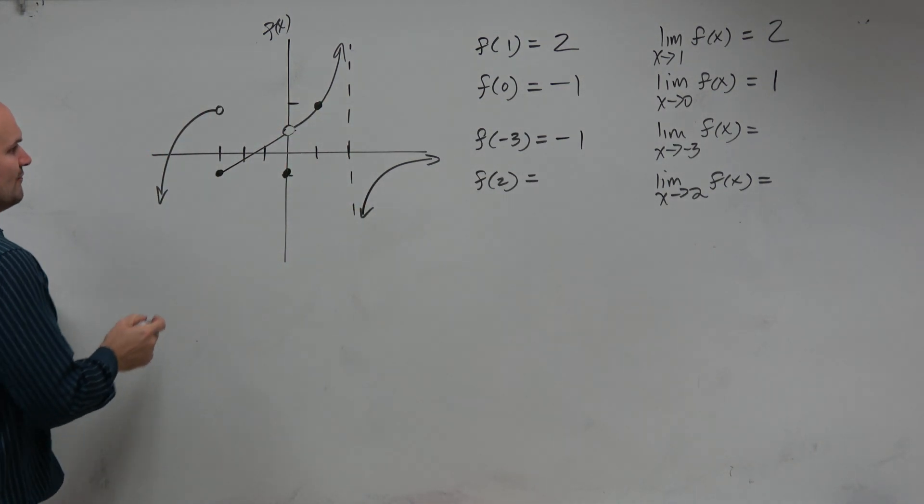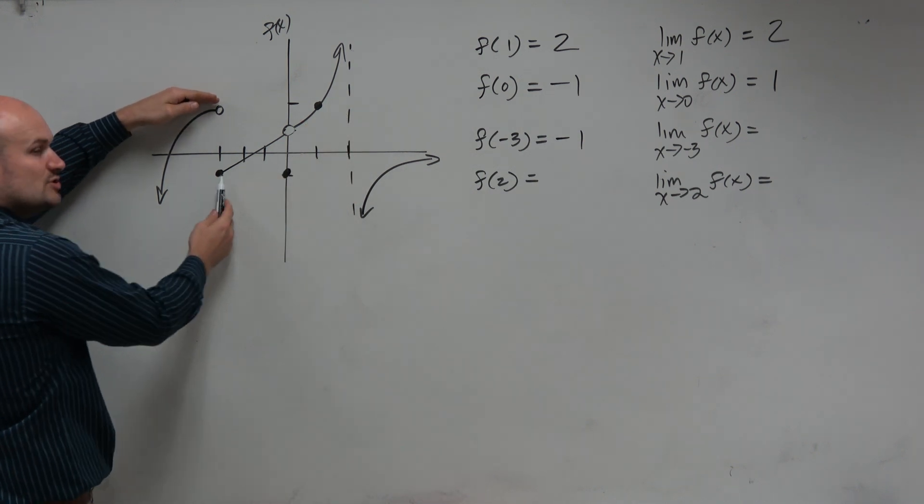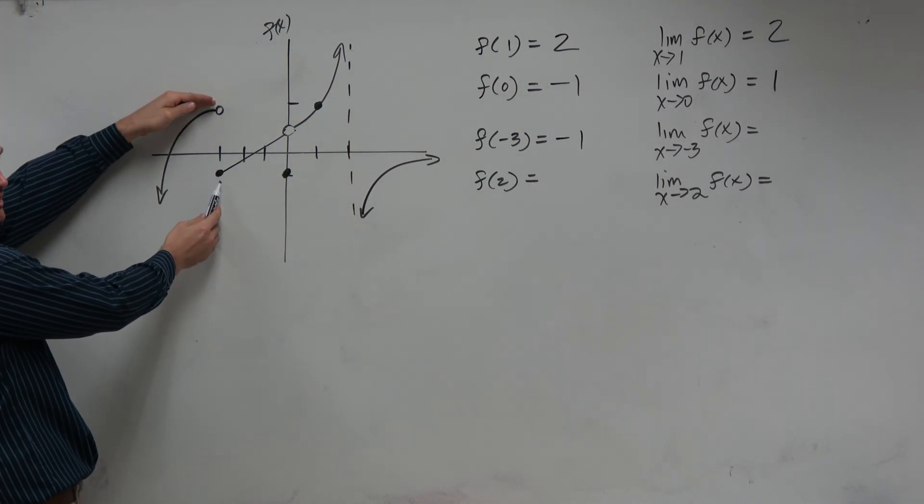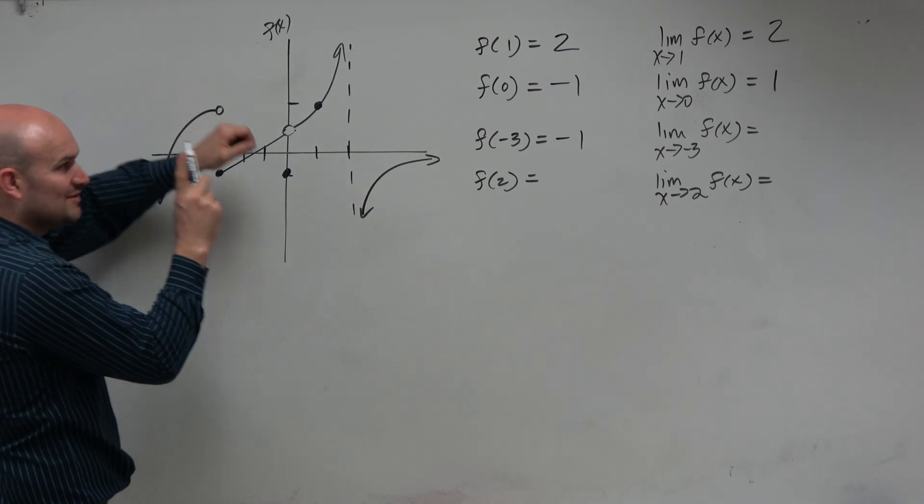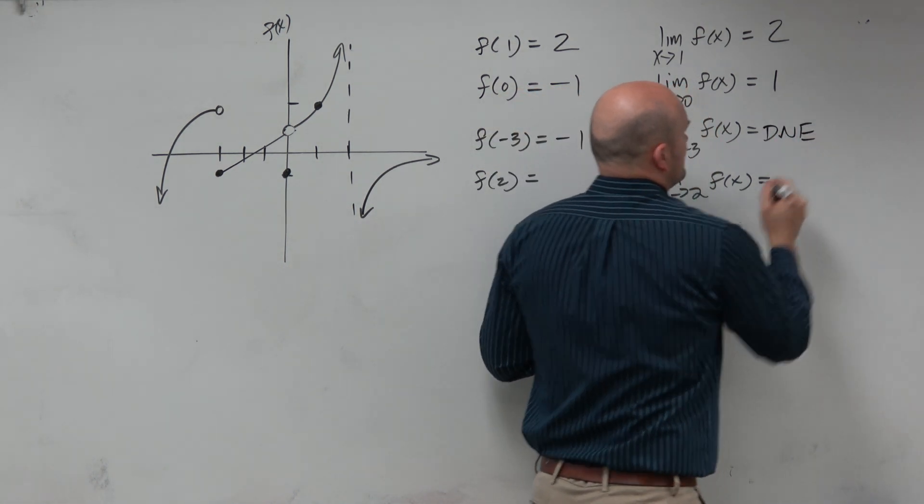However, where is it approaching? Well, from the left, it looks like it's approaching 2. From the right, it's approaching negative 1. So can we write 2 comma negative 1, like some people did up here? No, no, no, right? You can only write one number. So since it's approaching two different numbers, it does not exist.